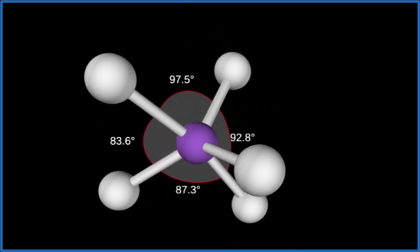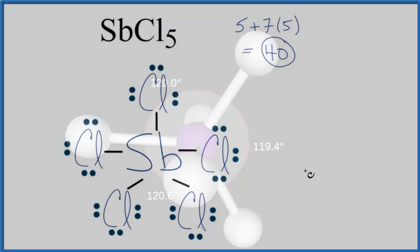Let's go back to our Lewis structure. If you use the AXE notation to find the molecular geometry for SbCl5, A would be the central atom, the Sb. X would be the number of atoms attached, 1, 2, 3, 4, 5.